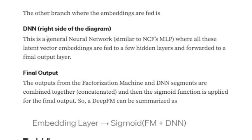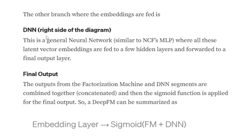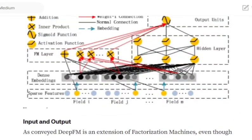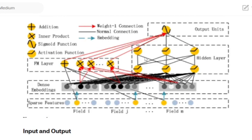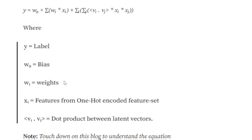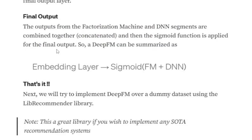The right-hand side is a DNN, very similar to the NCF multi-layer perceptron. All the embeddings are fed into a general neural network comprising multiple hidden layers, and the final output goes through a sigmoid activation function. The outputs from the factorization machine component on the left and the DNN on the right are then concatenated together, and a sigmoid activation function is applied. So Deep FM can be described as an embedding layer and sigmoid over factorization machine plus DNN.